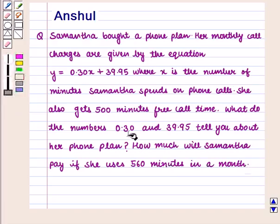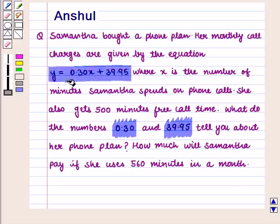In this question, we have to interpret the parameters given by 0.30 and 39.95. We are given the linear relationship by the equation y = 0.30x + 39.95, where x is the number of minutes Samantha spends on phone calls.